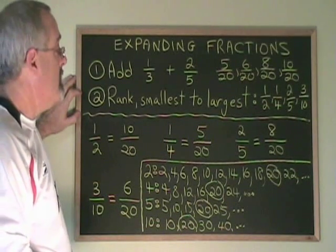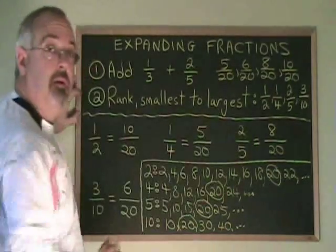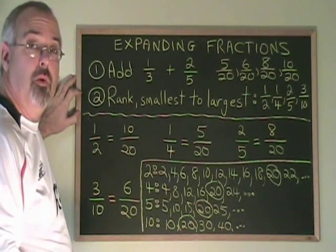This question becomes very easy to answer once you have expanded the fractions over the common denominator. And doing that is only possible when you're able to make lists of multiples and find the lowest common multiple of more than one number.